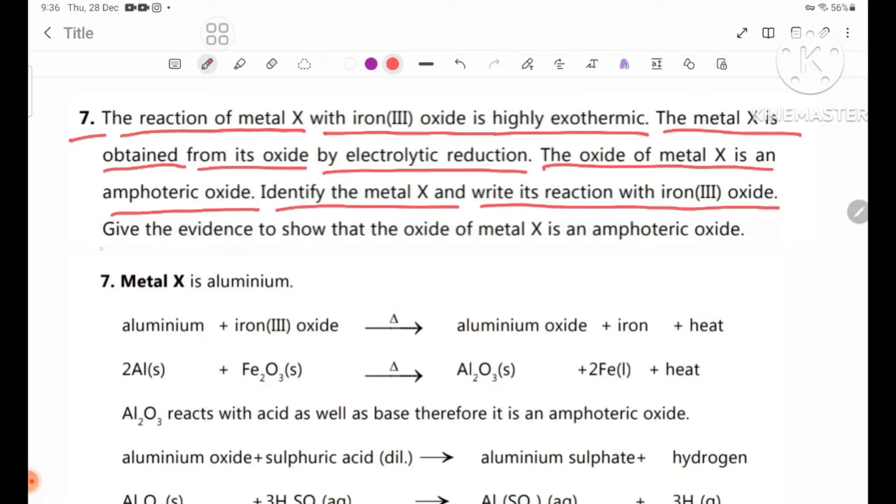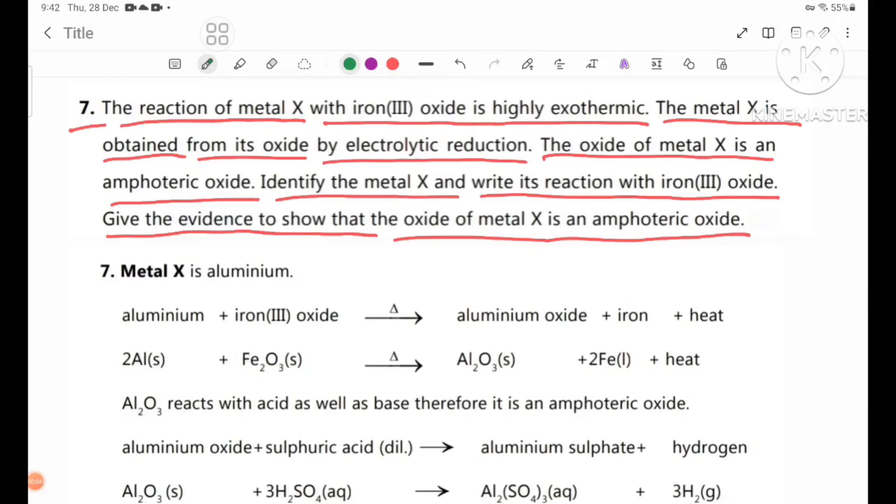Metal X is aluminum. The equation is aluminum plus iron(III) oxide forming aluminum oxide plus iron plus heat. Al solid plus Fe2O3 solid forms Al2O3 solid plus Fe liquid plus heat. This is an exothermic reaction.